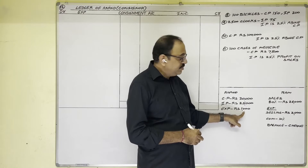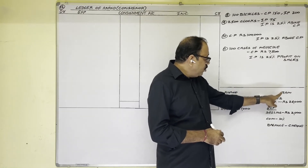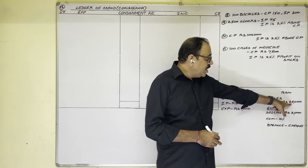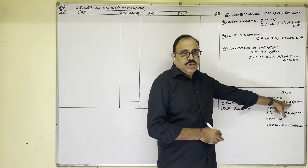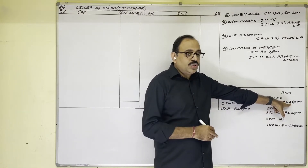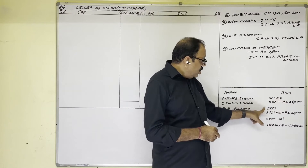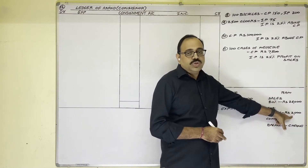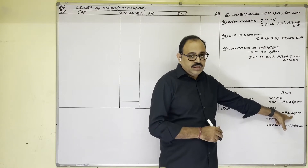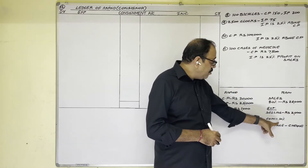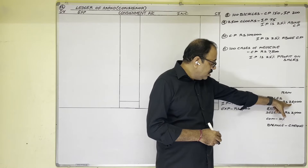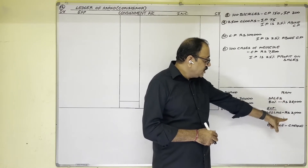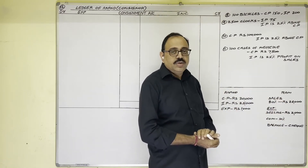To send these goods, the consignor incurred 1,000 rupees expenditure. The consignee was able to sell 80% of the goods for 26,000 rupees, so 20% is unsold stock. To sell the goods the consignee incurred expenses of 2,000 rupees as selling expenses. His commission is 10% on sales. For the due amount, the consignee sent one check to the consignor.